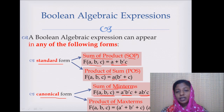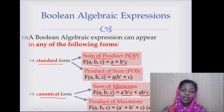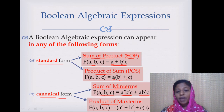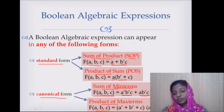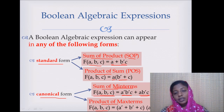Similarly, a maxterm has the same number of literals as the number of input variables, but here the literals are separated by the OR operation instead of AND. In standard product-of-sums form, the number of literals in each sum term may vary, whereas in a maxterm it is always equal to the number of input variables.